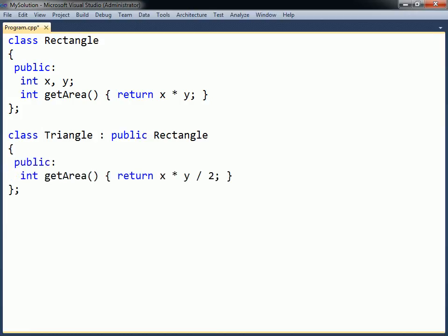Rectangle's getArea method is redeclared in Triangle with the same signature. The signature includes the name, parameter list, and return type of the method.